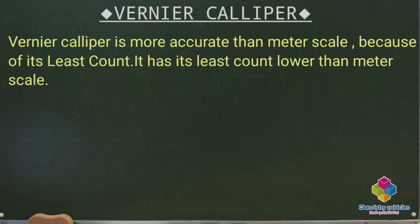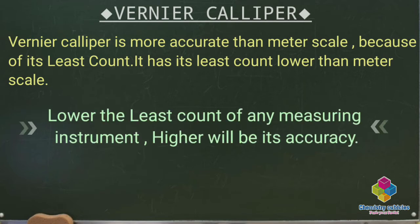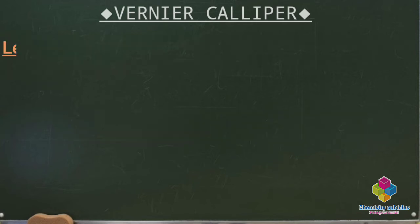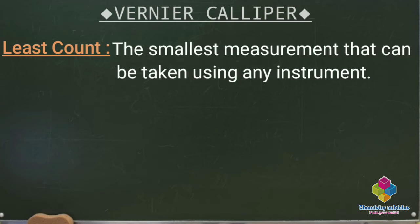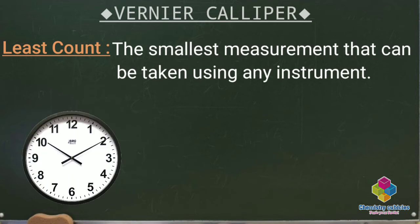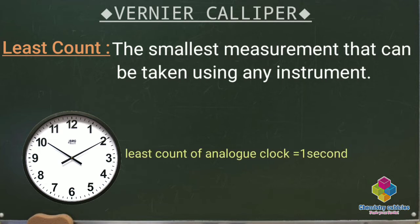This accuracy in vernier caliper is due to its least count. Lower the least count of any instrument, higher will be its accuracy. Least count refers to the smallest measurement that can be taken using an instrument. For example, our analog clock has its least count of one second, as one second is the smallest measurement that can be taken by our analog clock.